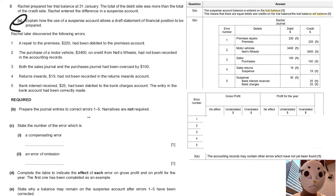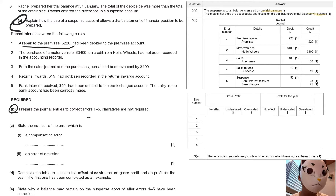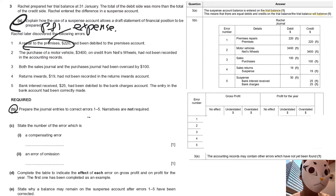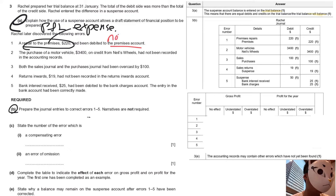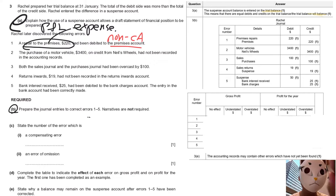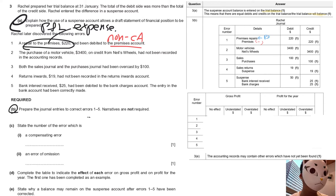For Part B, we have to prepare the journal entries and go through them one by one. The first one is a repair to the premises — this is an expense that should go in the profit and loss account, but it was put in the non-current asset account. This must be wrong. We have to deduct it from non-current assets and add it to profit and loss as an expense.